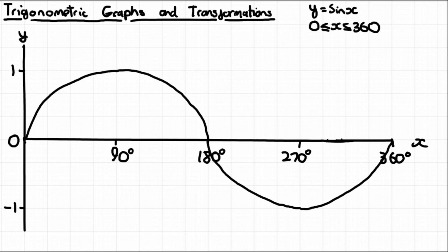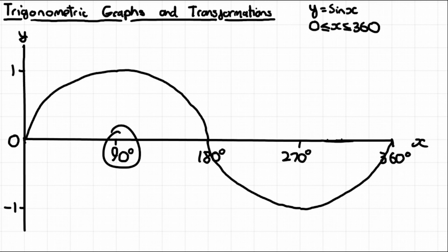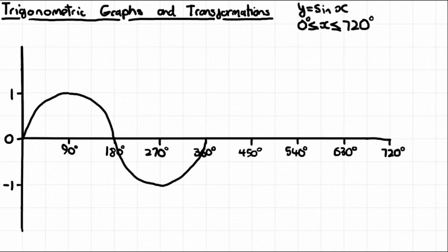A common mistake with drawing trigonometric graphs is getting where the specific points go — at 90, 180, and so on. Just remember it hits 1 at 90 degrees and then hits 0 again at 180 degrees.